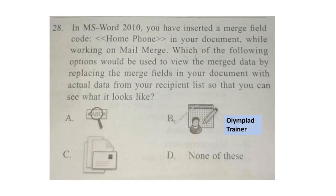Question 28: In MS Word 2010, you have inserted a merge field code 'Home Phone' in your document. While working on mail merge, which of the following options would be used to view the merged data by replacing the merge fields in your document with actual data from your recipient list so that you can see what it looks like? The correct answer is option A.